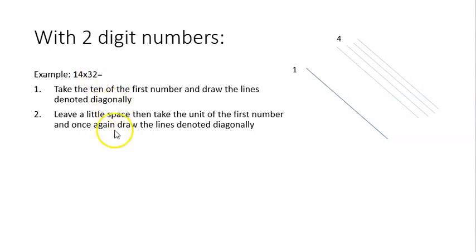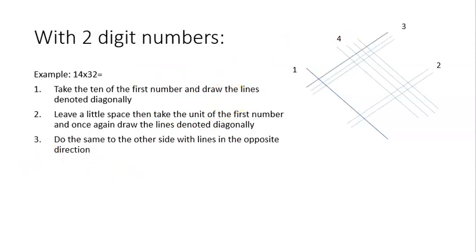Step one is to take the tens from the first number, so from 14 take the 1 and draw one diagonal line from left to right. Then we leave a little space and draw the four diagonal lines denoted by the units. Step three: we do the same for the other side. So we draw three lines for the 30, leave a little space, and draw two lines for the 2.